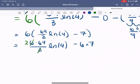Continuing to simplify, 6 and 3 cancel, giving us 2 in the numerator. We're left with 128 times ln of 4 minus 42. There is our answer.